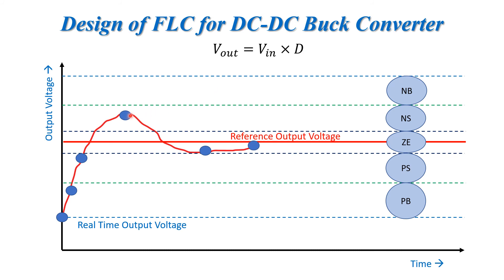For this point, we can set a rule: if the error is negative small, then decrease the duty cycle. Similarly, for this other point where the voltage is very low, a greater push of the control signal is required to bring it to the desired value.